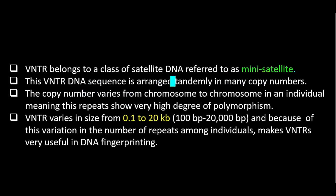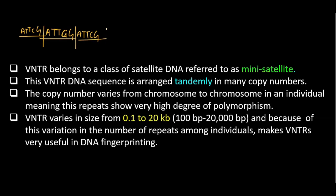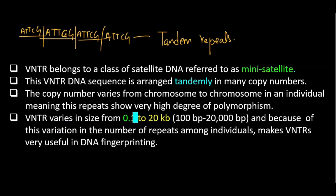VNTRs belong to a category of satellite DNA called mini-satellites. The repeating unit is arranged tandemly — for example, ATTCG repeated immediately one after another without any break, continuously. This is called tandem repeats. The size of VNTRs ranges from 0.1 to 20 kb (kilobases), meaning from 100 base pairs to 20,000 base pairs.